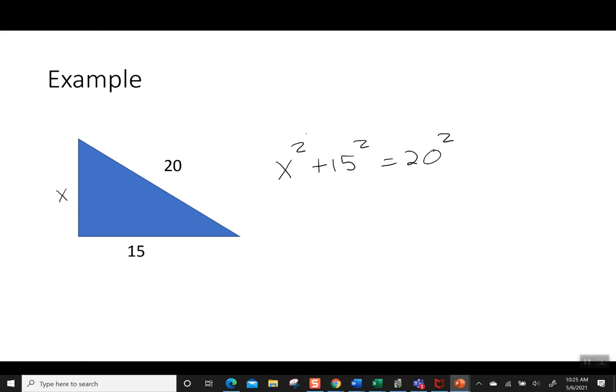All right, so to get the x squared alone, I'm going to move the 15 squared to the other side. So I have x squared equals 20 squared minus 15 squared. Remember, order of operation is exponent before I do addition or subtraction, so I don't want to do 20 minus 15 right now. I want to go to Desmos right now, and we're going to put in 20 squared minus 15 squared.